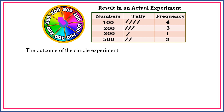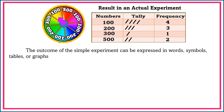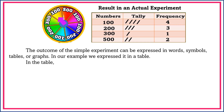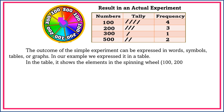The outcome of the simple experiment can be expressed in words, symbols, tables, or graphs. In our example, we expressed it in a table. In the table, it shows the elements in the spinning wheel: 100, 200, 300, and 500.